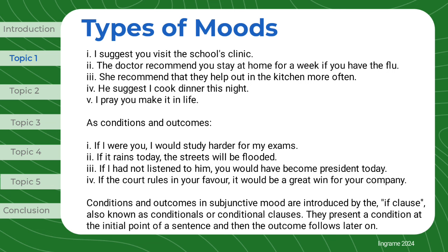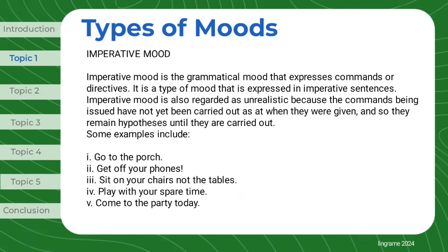As conditions and outcomes: 'If I were you, I would study harder for my exams,' 'If it rains today, the streets will be flooded,' 'If I had not listened to him, you would have become president today,' 'If the court rules in your favor, it would be a great win for your company.' Conditions and outcomes in subjunctive mood are introduced by the 'if' clause, also known as conditionals or conditional clauses. They present a condition at the initial point of a sentence and the outcome follows later on.